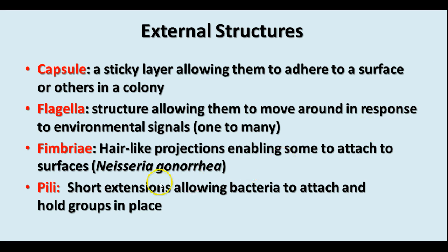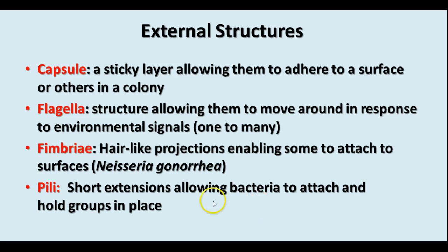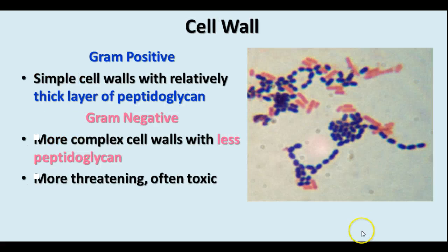Fimbriae are hair-like projections that allow bacteria to attach to surfaces, and pili are short extensions that allow them to attach and hold groups in place. There are also some pili that allow bacteria to exchange plasmids with each other.